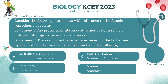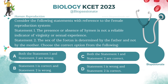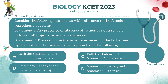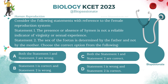Consider the following statements with reference to the female reproductive system. Statement 1: The presence or absence of hymen is not a reliable indicator of virginity or sexual experience. Statement 2: The sex of the fetus is determined by the father and not by the mother. Choose the correct option. Answer: Option C.